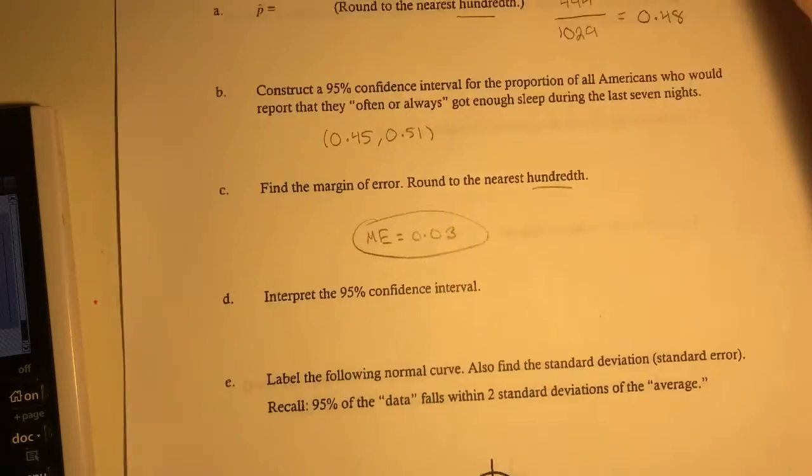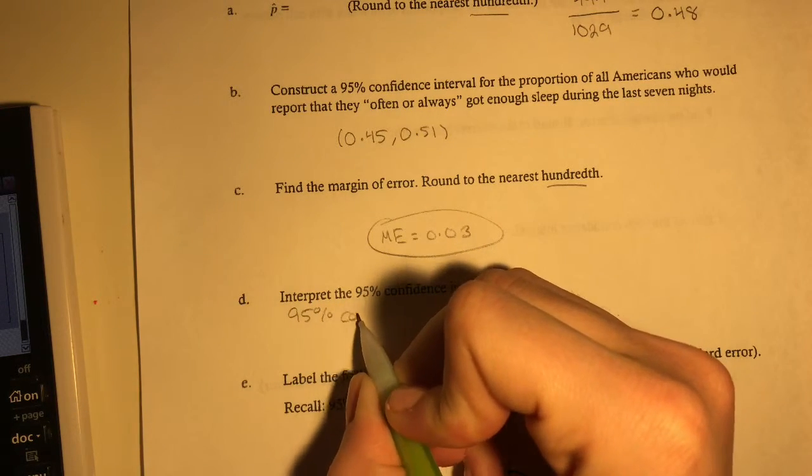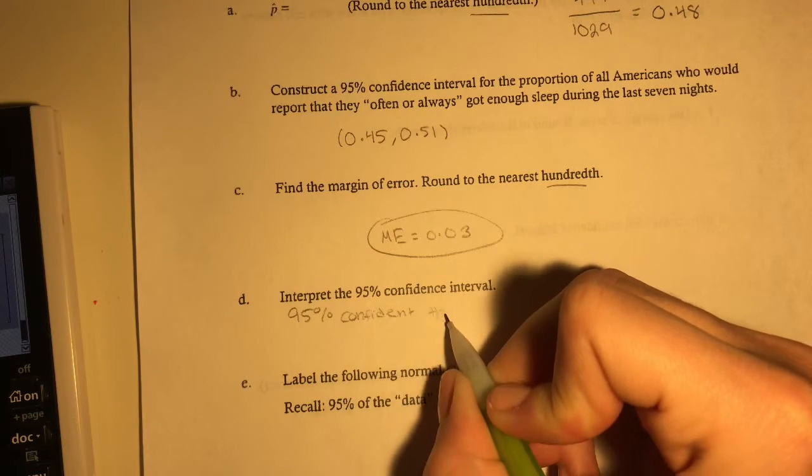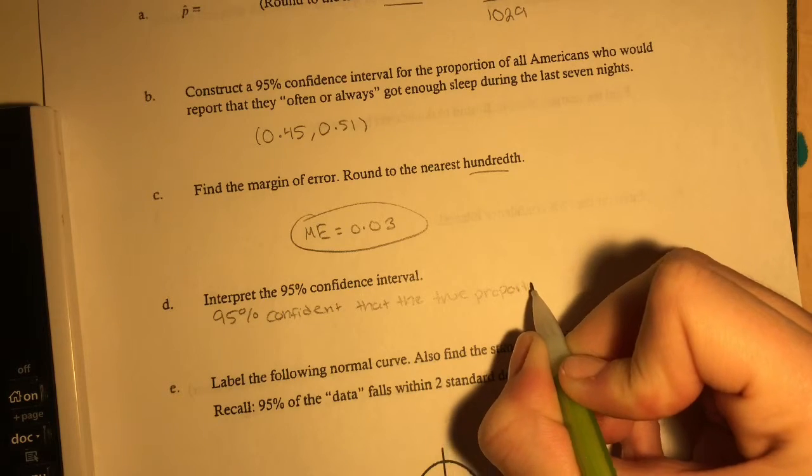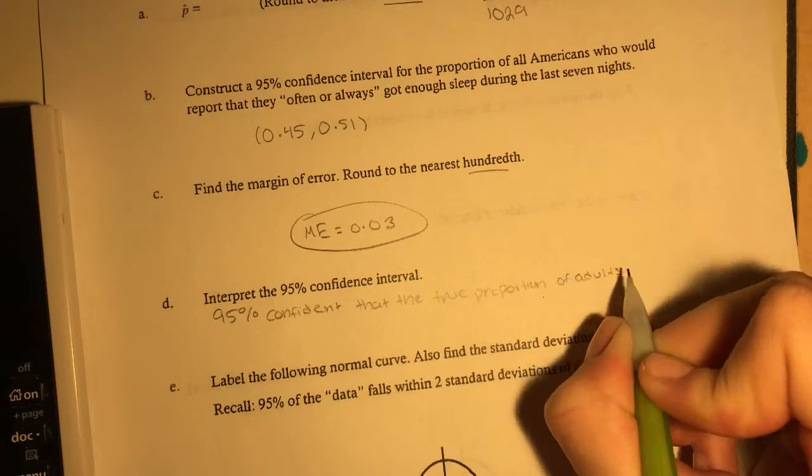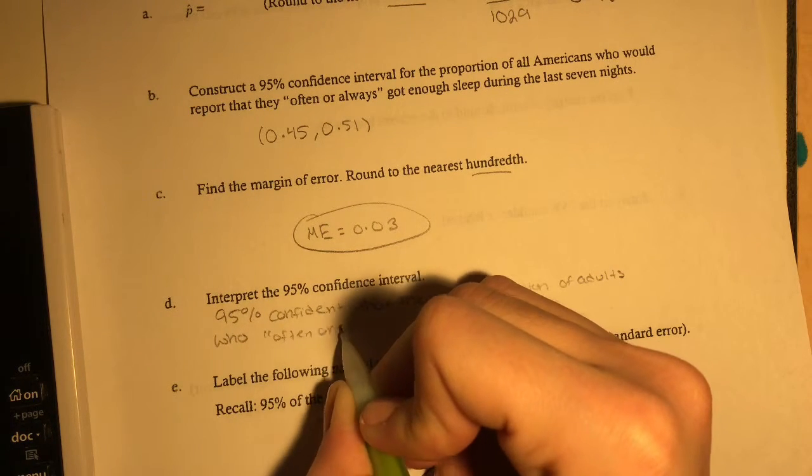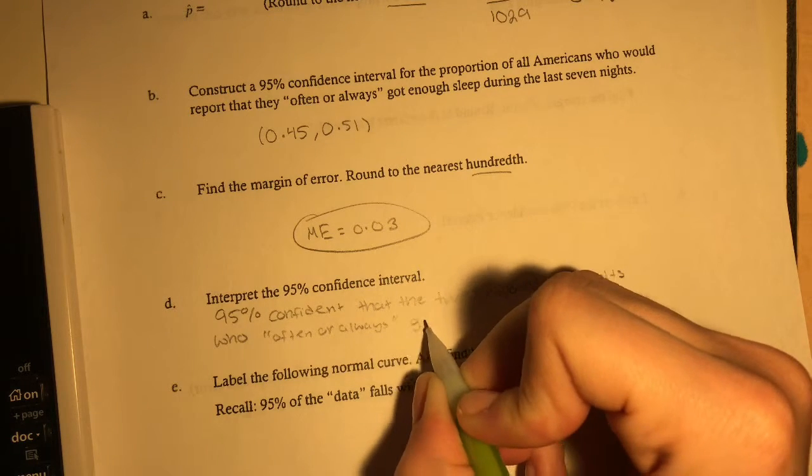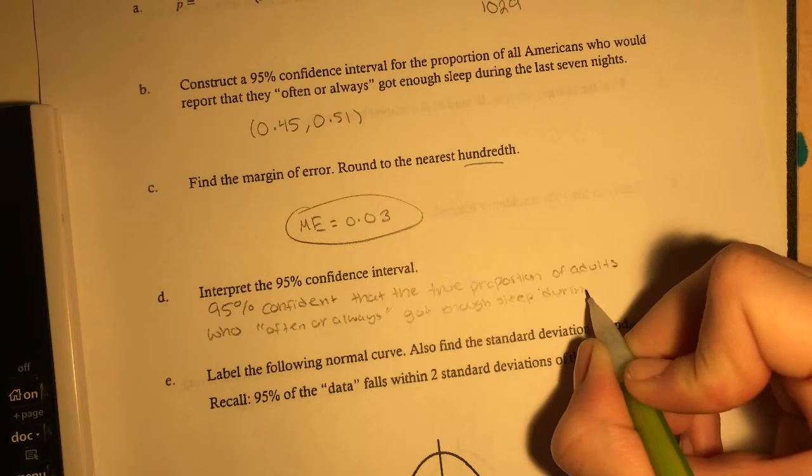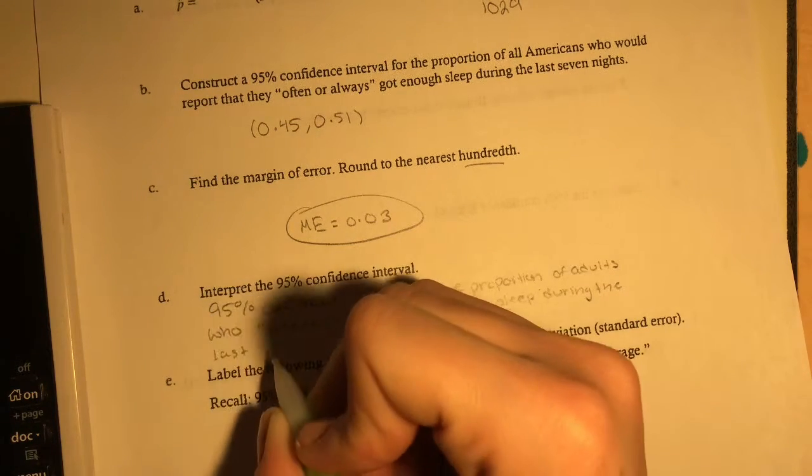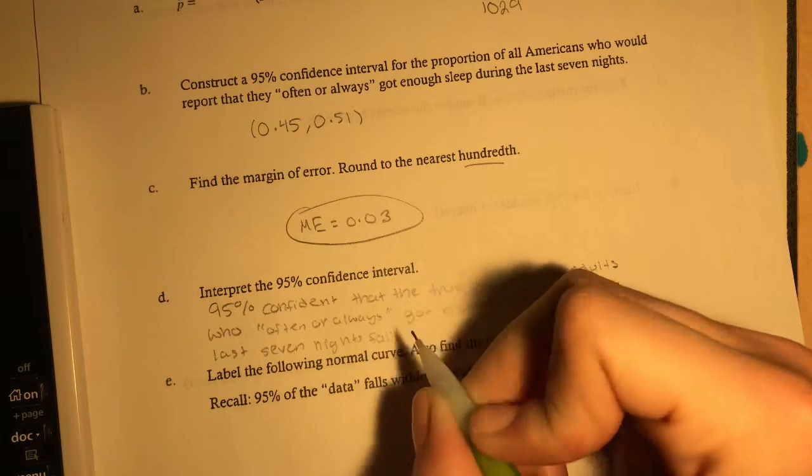Interpret the 95% confidence interval. Here we're just going to say we are 95% confident that the true proportion of adults who often or always got enough sleep during the last seven nights falls in the interval.